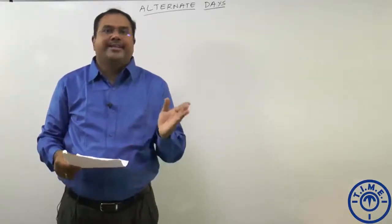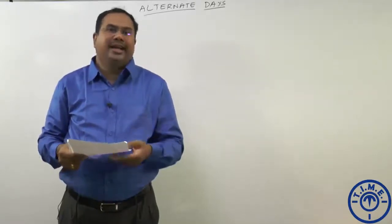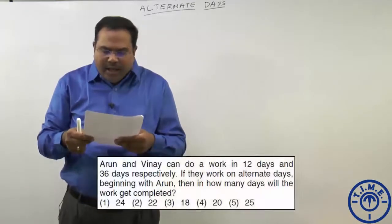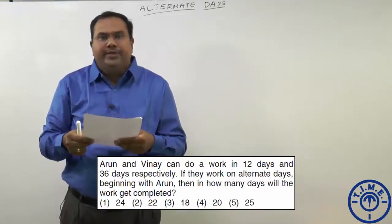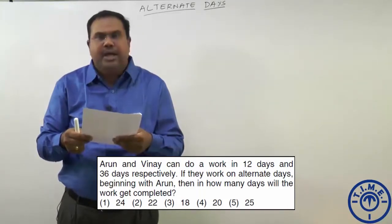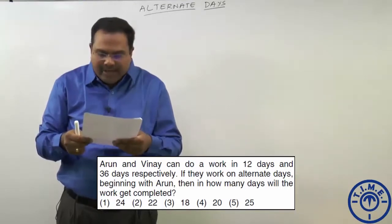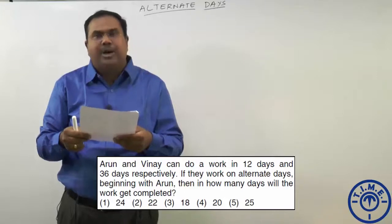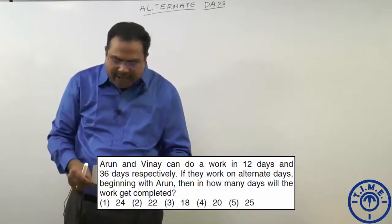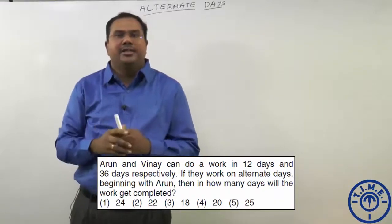Let us look at our next model: two or more people working on alternate days — the alternate days model. Let us take one example. Arun and Vinay can do a work in 12 days and 36 days respectively. If they work on alternate days beginning with Arun, then in how many days will the work get completed? Arun can complete the work in 12 days and Vinay can do the work in 36 days. They are working on alternate days starting with Arun.